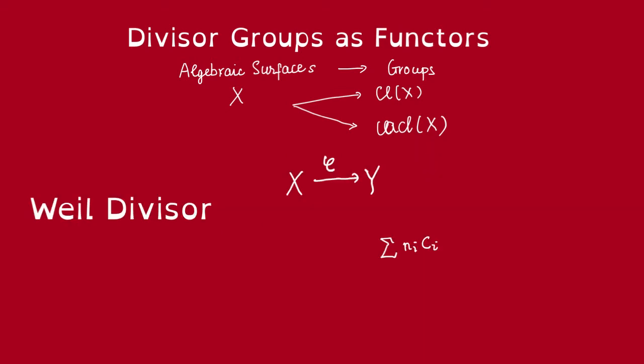The question is, can we do the same for Weil divisors? Can we just send this divisor to its pullback, i.e., just take the pre-images of these c_i? Does this work? Well, not quite. The problem is that these pre-images might not be codimension-1 irreducible subvarieties anymore. So this formal sum might no longer be a divisor. We'll have to cross out that plan, and we cannot pullback Weil divisors, but we don't have to give up.